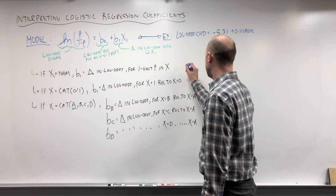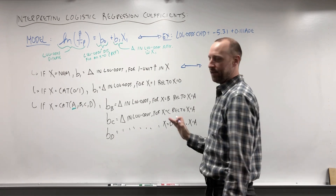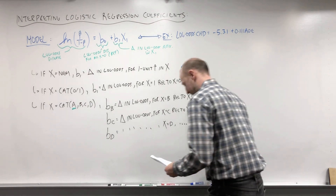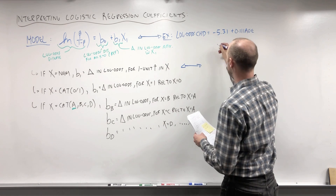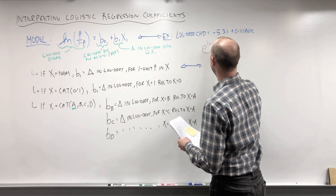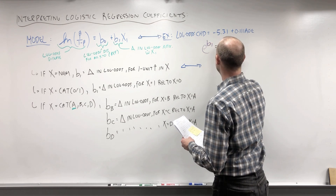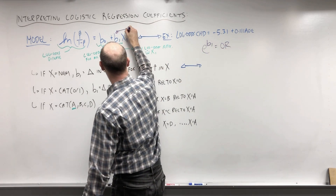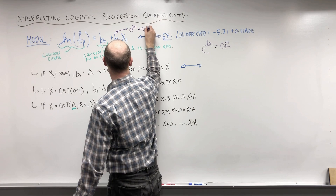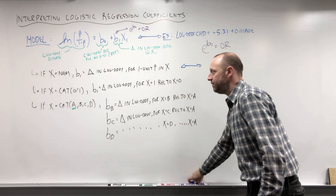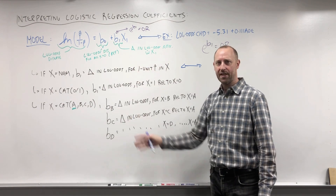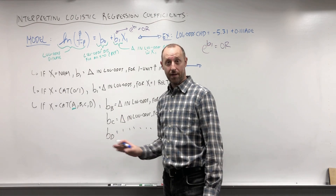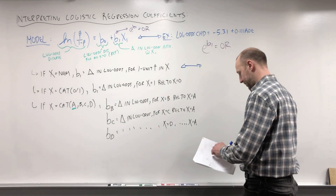Now, something I'm going to state as a fact — and in a separate video I'll show you why this is. If we exponentiate these coefficients, we're going to get odds ratios. So e to the B1 gives us an odds ratio. I'll write the generic interpretations here, and then in a separate video I'll show you why exponentiating the coefficient gets us an odds ratio.